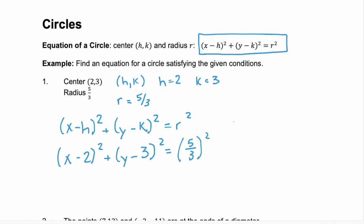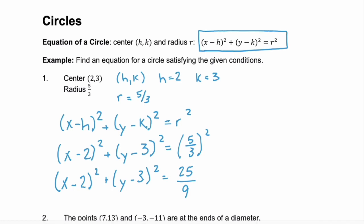Then we need to simplify but the only thing we need to simplify here is the right hand side where we have to square the radius, and 5/3 squared you square the numerator 25 and you square the denominator 9. So there we have the equation for a circle with center at 2,3 and a radius of 5/3.